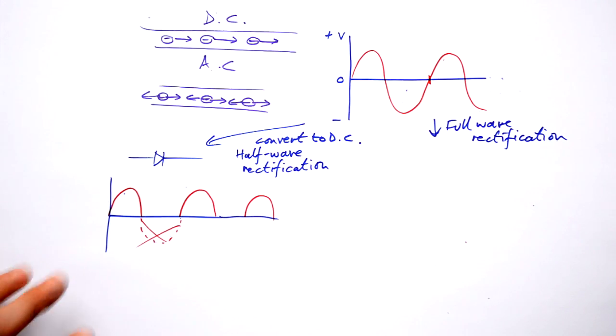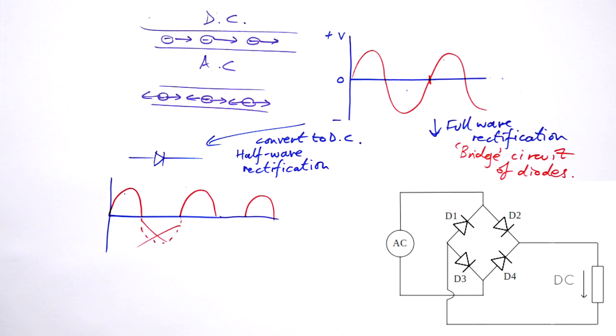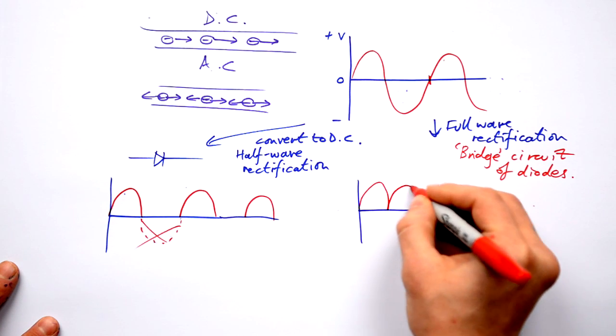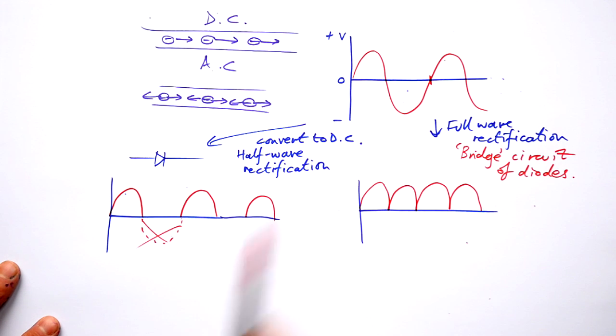But what we can do is instead have a bridge circuit of diodes. A bridge circuit is a very clever setup of four diodes in a diamond to make sure no matter which way the AC comes in, it always goes out in the same direction. And what we end up with is all of our lumps being put on the top there. So the electrons are going like this but they are moving in the same direction, so we have lumpy DC.